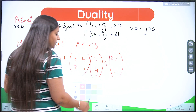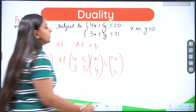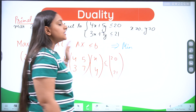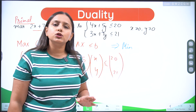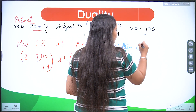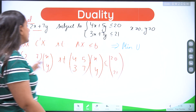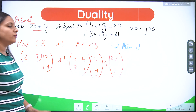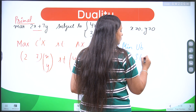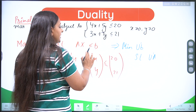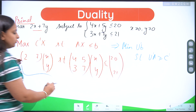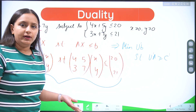Now, how do we make the dual problem? For making the dual problem, we first write: minimize. Since we are using x, y variables in the primal, we cannot reuse them, so we use a different set of variables — u1, u2, or p, q, or any other two variables. I'll use u, containing u1 and u2. To convert it, I will have u'b subject to u'A, and since I had ≤ in the primal, I will have ≥ at this place in the dual.